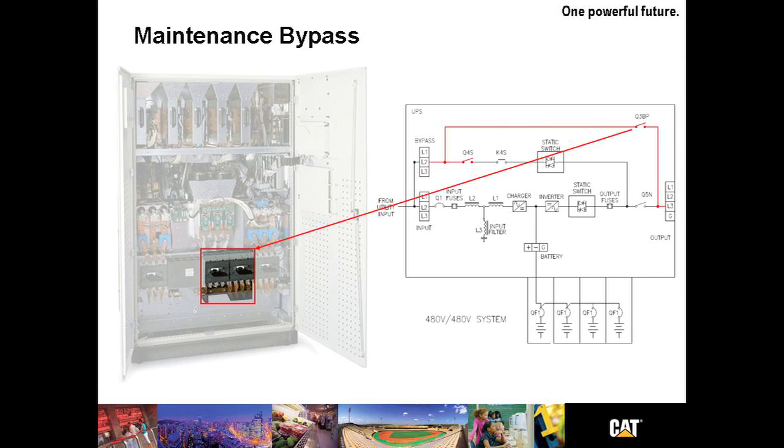The maintenance bypass shown here at the connection point at the bottom of the UPS. All the UPS B220s have an internal maintenance bypass. This is provided so the UPS can be maintained. In paralleled systems, the maintenance bypass is located in the system cabinet.